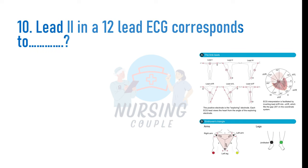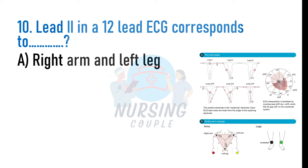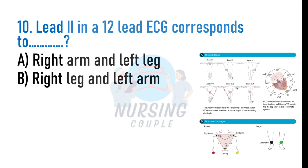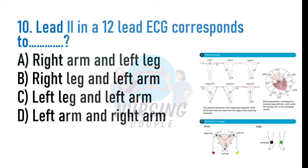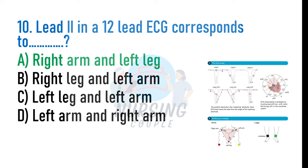Lead 2 in a 12-lead ECG corresponds to what? A. Right arm and left leg, B. Right leg and left arm, C. Left leg and left arm, D. Left arm and right arm. The answer is A: Right arm and left leg. The 12-lead ECG primarily records the electrical activity of the left ventricle. Lead 2 compares the left leg with the right arm and views the inferior aspects of the left ventricle.